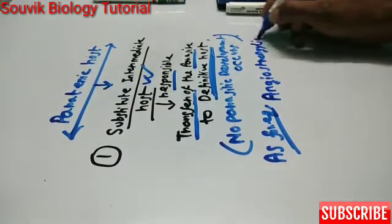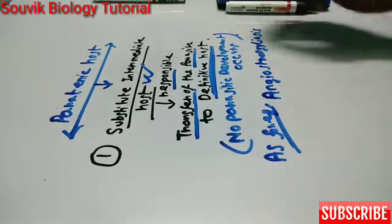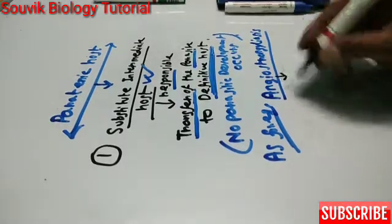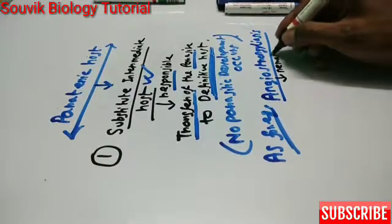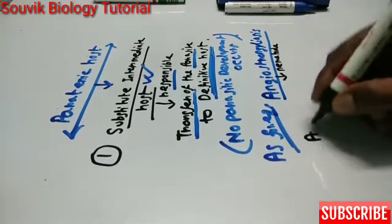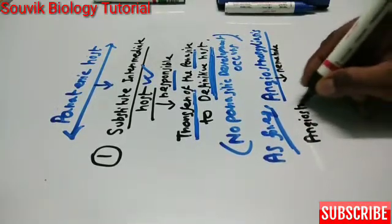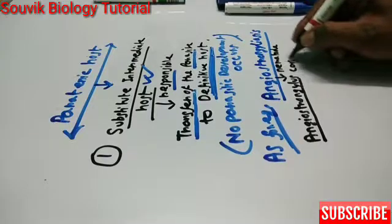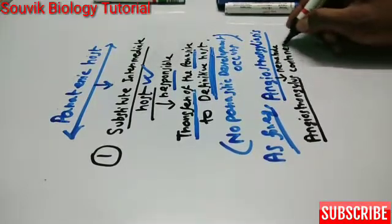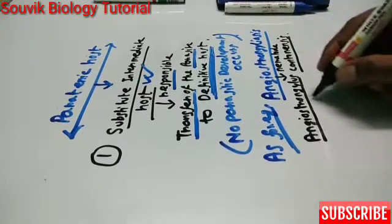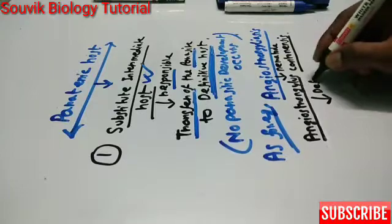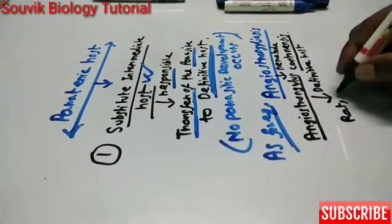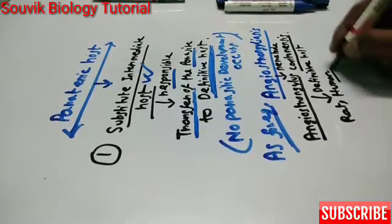The disease is angiostrongyliasis, which is very important. It is caused by a nematode parasite which is Angiostrongylus cantonensis. The definitive host is mainly the rat, and human is also the accidental definitive host.